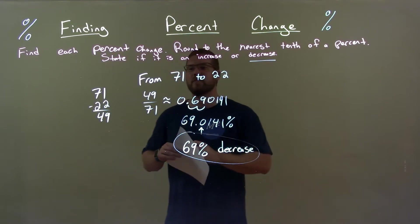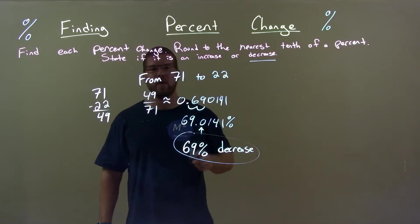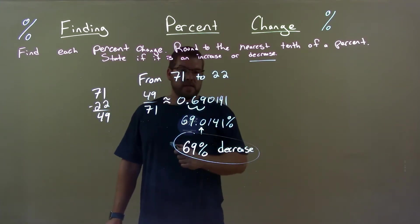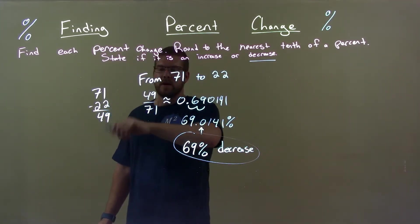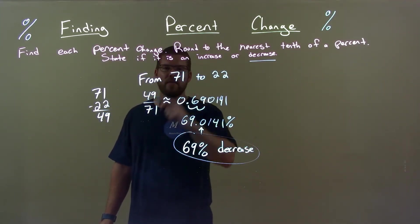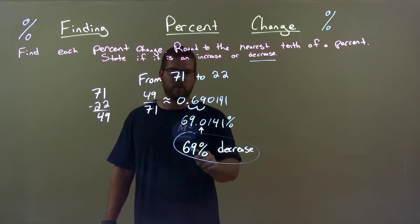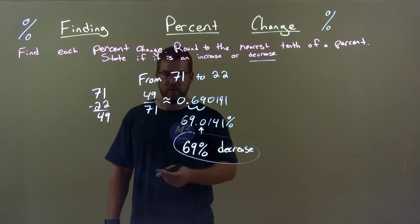Quick recap. We're given from 71 to 22 and we have to find the percent change. Well, we realize that's a decrease. Then, difference of the two. Take that number divided by the first number. Got a decimal. Decimal to a percent. Percent. That's rounded. Bring the decrease down. And our final answer, 69 percent decrease.